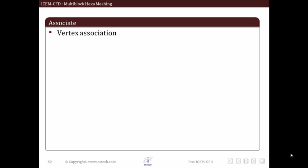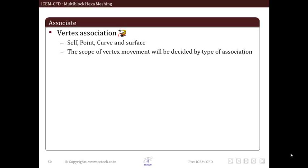First let us see vertex association which is given by this particular icon. This option allows us to associate vertices of geometry. We can associate vertices to either a point or curve or surface. If a vertex is associated to point then vertex is fixed. If associated to curve then it can move along associated curve only and similarly for surfaces.